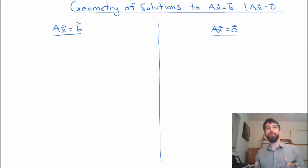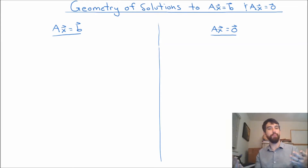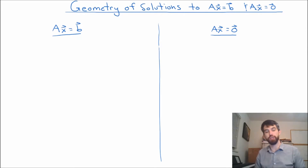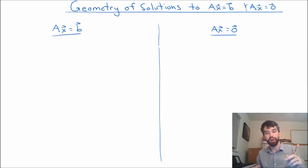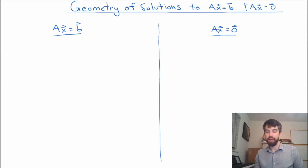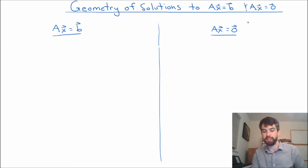In this video, I want to look at the geometry of a solution — what does it mean if I have a solution, and what does that look like? In particular, we're going to contrast two different but related situations: a linear system of the form Ax = b, and the linear system with b equal to zero, or in other words, Ax = 0. This scenario is referred to as a homogeneous system.